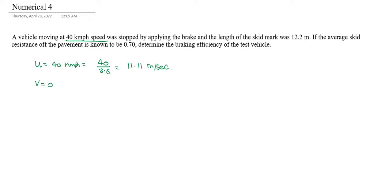This vehicle is at 40 km per hour speed. The length of the skid mark is 12.2. The average skid resistance of the pavement is 0.700.